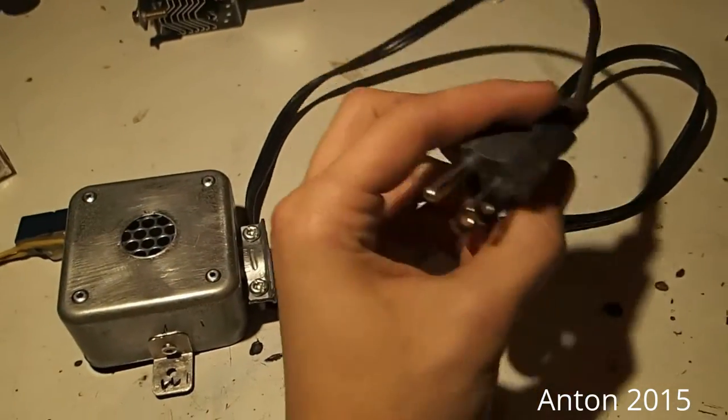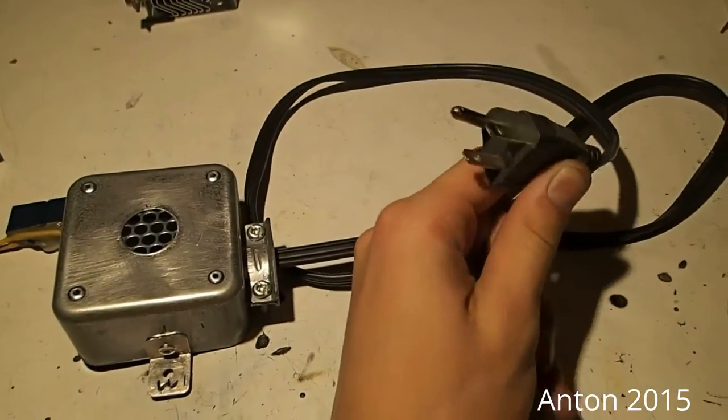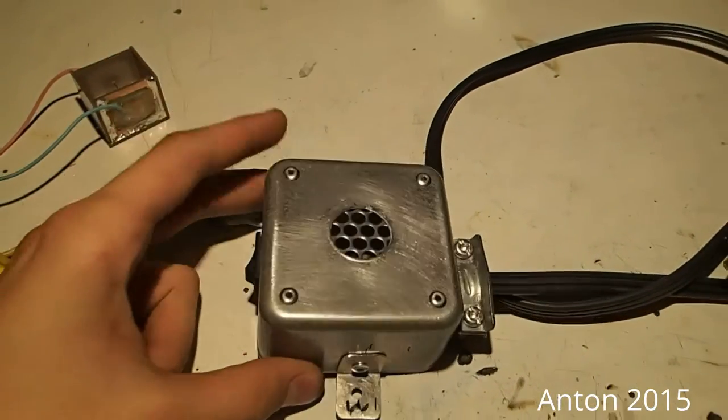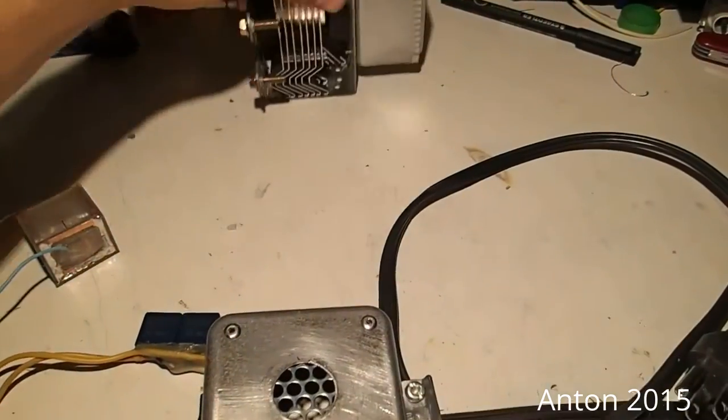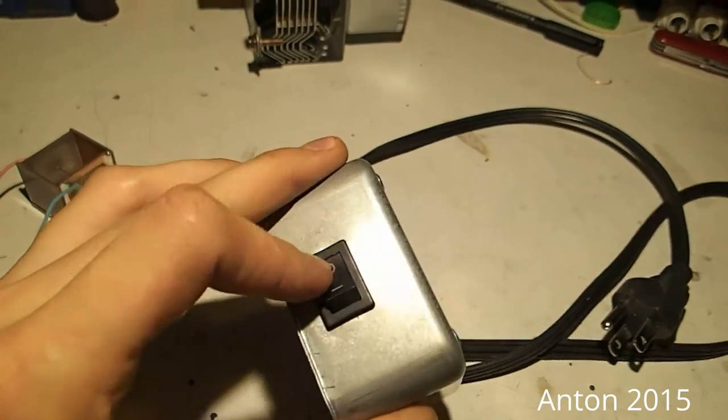This device here plugs straight into the main socket, 120 volts. This is built into a metal box off the back of a magnetron, and it has a little power switch up top to turn it on and off.